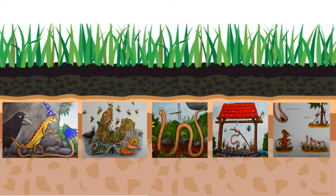And then the last picture is of Superworm helping out all of his friends. Does he help out all these friends at the beginning of the story, in the middle of the story, or at the end of the story?